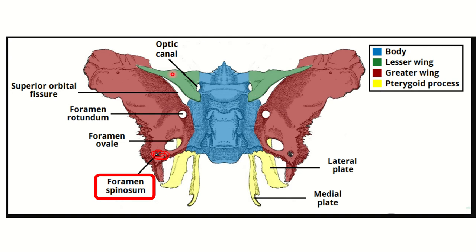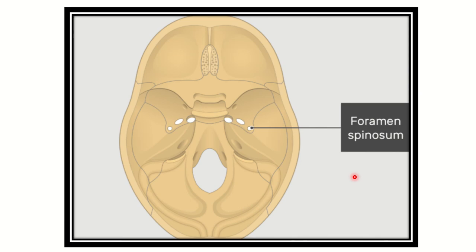The important foramina are: optic canal, superior orbital fissure, foramen rotundum, foramen ovale, and foramen spinosum. The sphenoid bone has different parts — the body, the lesser wing, the greater wing, and the pterygoid processes. In this image also we can see the foramen spinosum lies behind the foramen ovale.